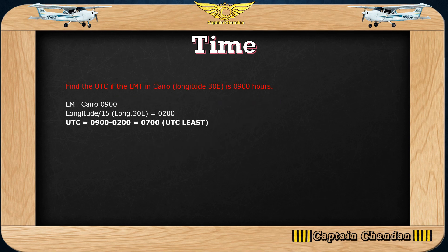Example: find UTC. LMT is given as 0900 hours, longitude is 30 degrees East. Divide 30 by 15 to get 0200 hours. Since longitude is East — UTC least — UTC will be less than LMT. So UTC = 0900 minus 0200, which gives UTC = 0700 hours.